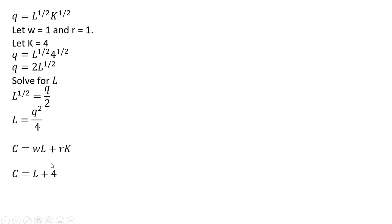And since W is 1 and R is 1 and K is 4, I'm going to make some substitutions. Substituting in for the wage, the price of capital, and K. And now we're going to substitute in for L. We're going to plug in Q squared divided by 4 in for L here. And that is our cost function.